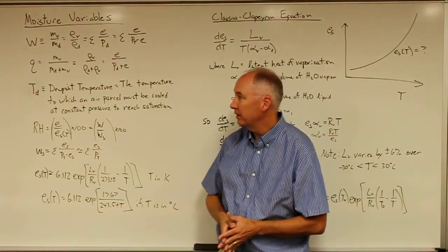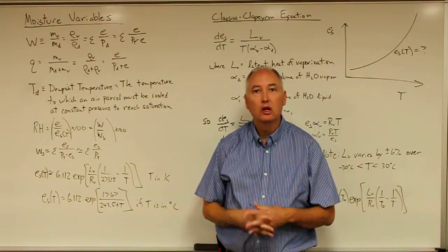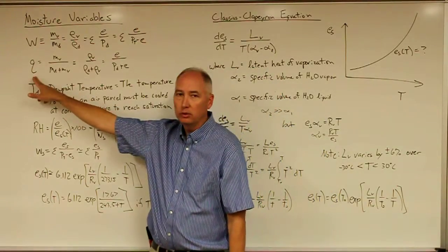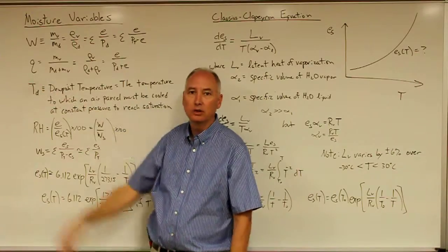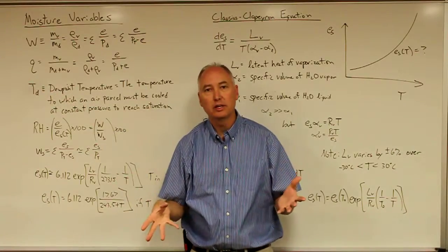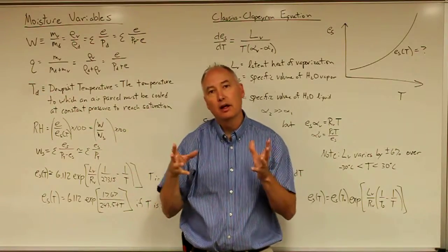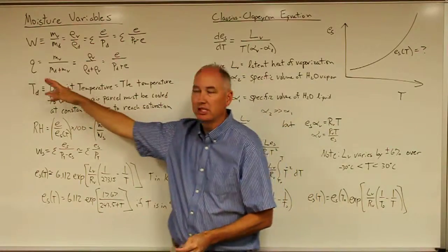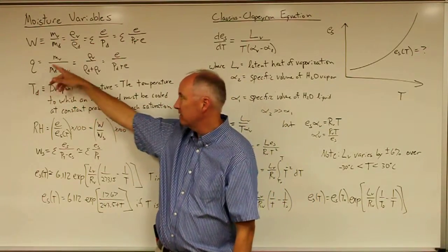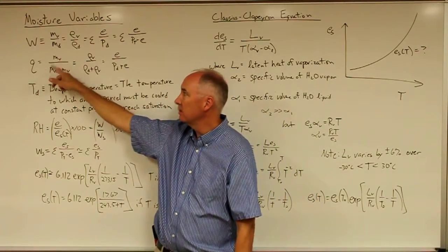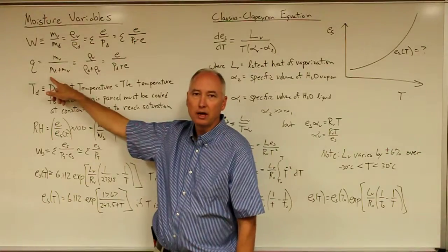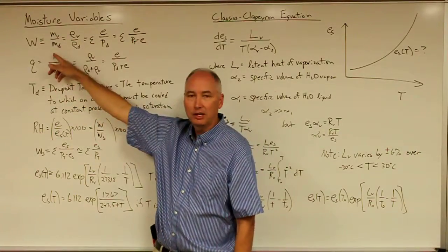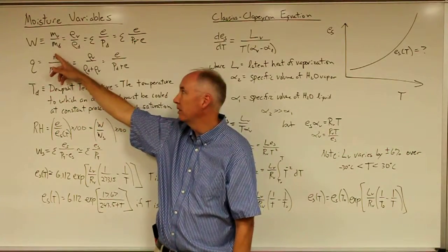I'd like to now introduce three other moisture variables. We'll start with Q — not to be confused with the Q in the first law of thermodynamics. This is known as the specific humidity, and it's the mass of the vapor divided by the mass of the dry air plus the mass of the vapor. So it's a slight modification of the mixing ratio.